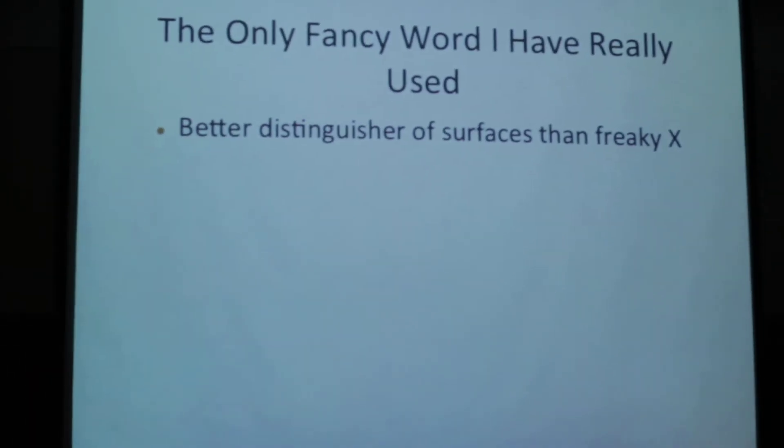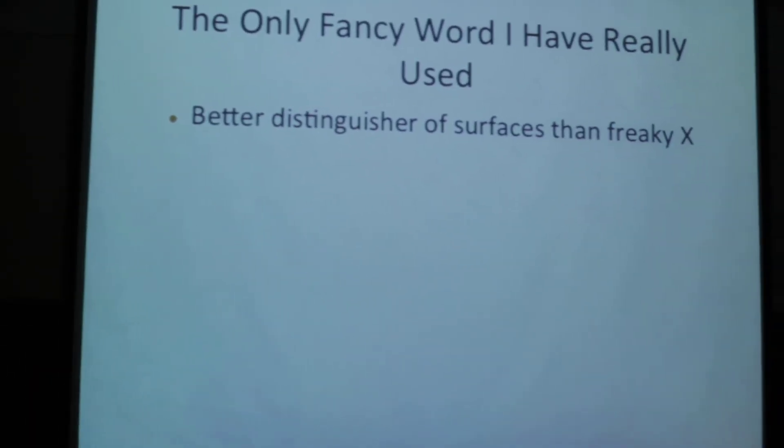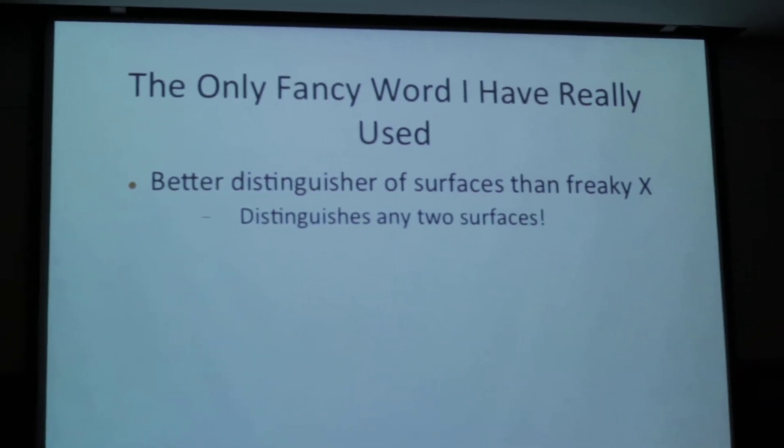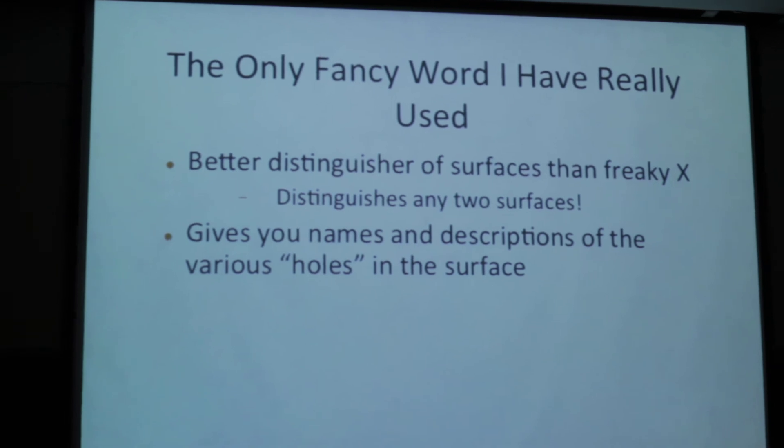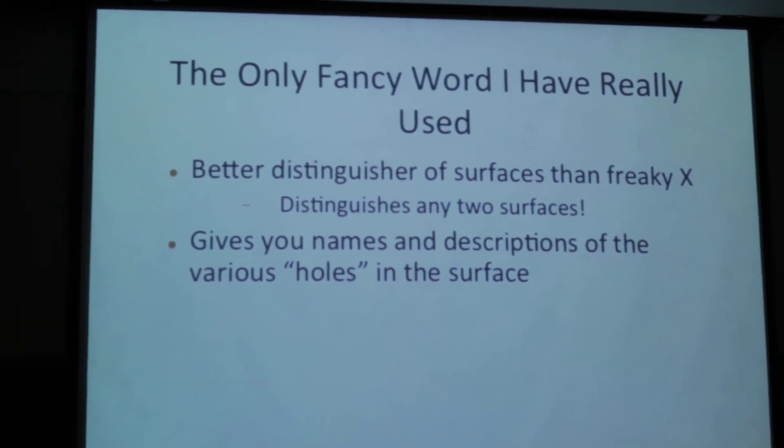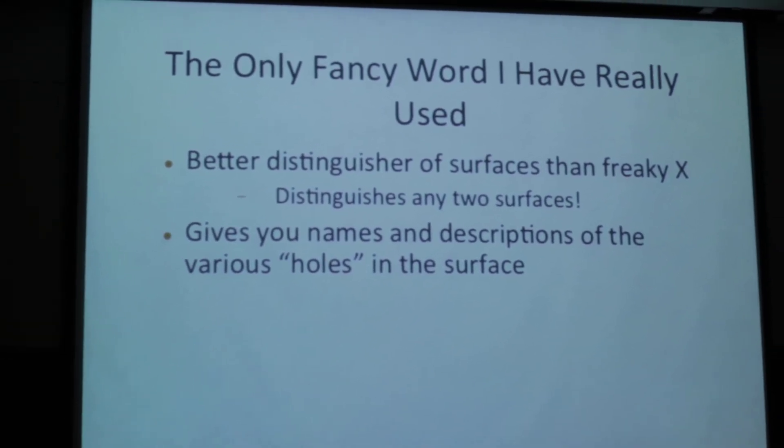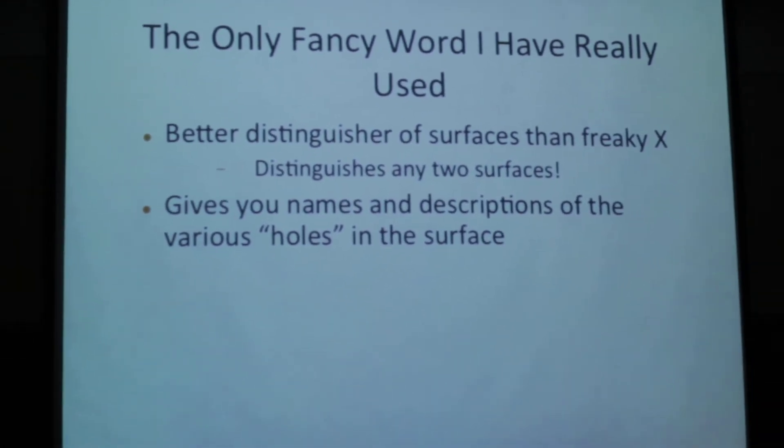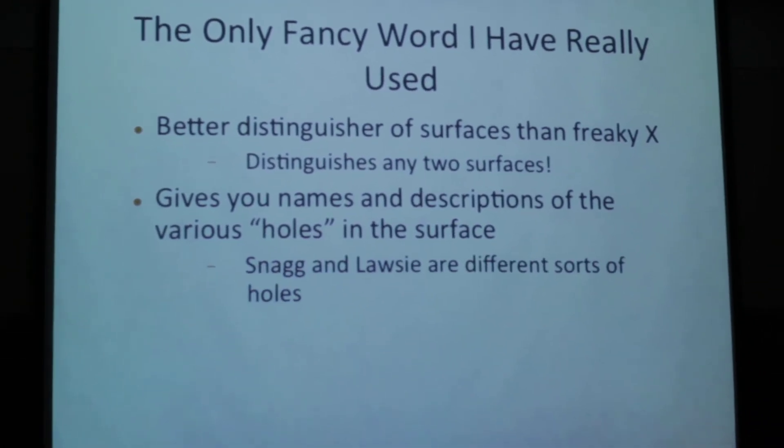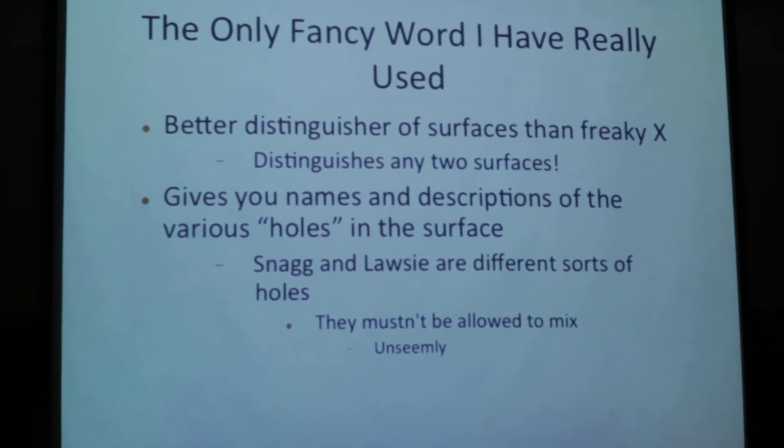And so this is useful because obviously it's a better distinguisher of surfaces than Freaky X, but it actually distinguishes any two surfaces. Likewise, it gives you names and descriptions of the various holes in the surface, so you can tell when a hole looks more like a Lossy and when it looks more like a Snag in some arbitrary surface. And in particular Snag and Lossy are different sorts of holes. They mustn't be allowed to mix, it would be unseemly.